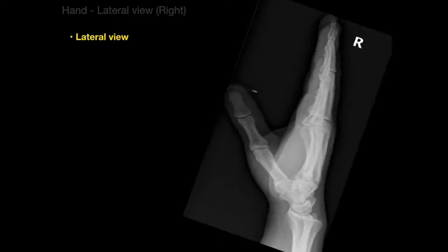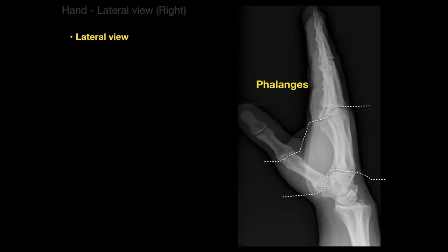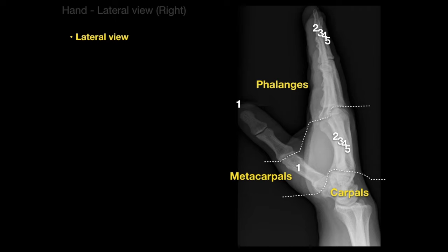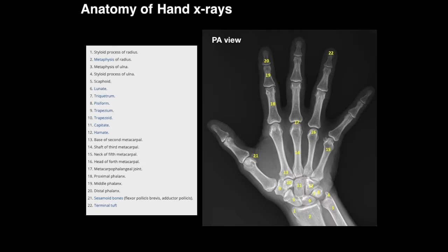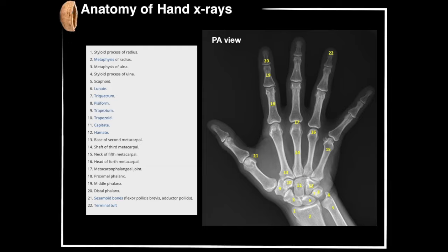The lateral view of the right hand shows the phalanges: digit one is the thumb, and the other four are all overlapped. The benefit of the lateral projection, which is 90 degrees to the PA view, is that you can see if there's fracture displacement in the carpal bones. It's also useful when a foreign body is sticking through the hand, as it's easier to see on this view. And there is the radius and ulna. That, my friends, is the anatomy of hand x-rays in a nutshell.